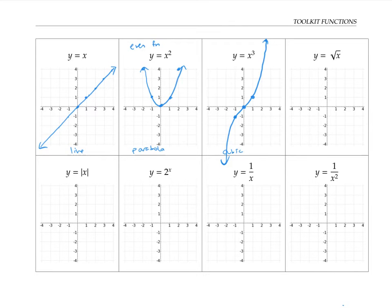This function is what's called an odd function, because it has 180-degree rotational symmetry around the origin. If I rotate this whole graph by 180 degrees, or in other words, turn the paper upside down, I'll get exactly the same shape.